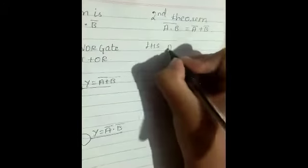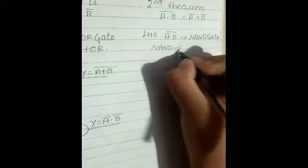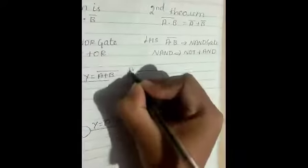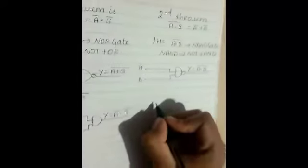Second theorem: a into b, the whole bar, equal to a bar plus b bar. The left hand side is a into b, the whole bar, which is said to be a NAND gate. It is the combination of NOT plus AND. The two inputs a and b are combined with NOT and AND gates, and the output is y equal to a into b, the whole bar.